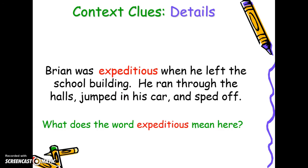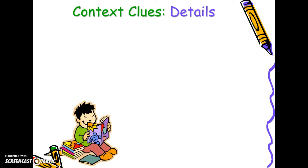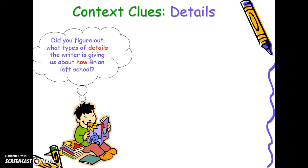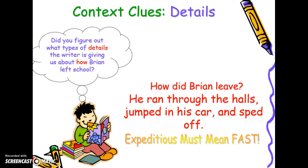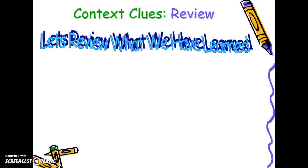Now try it on your own. 'Brian was expeditious when he left the school building. He ran through the halls, jumped in his car, and sped off.' How did Brian leave? The answer is how — it shows us there are details here. He ran through the halls, jumped in his car, and sped off. All of those would need to be highlighted to get the answer correct on your test.